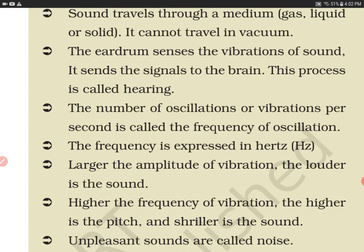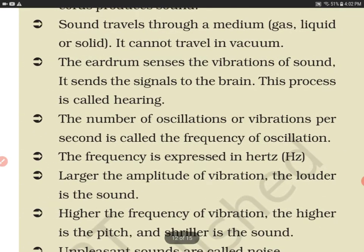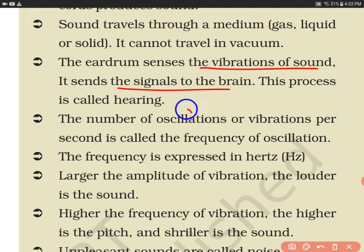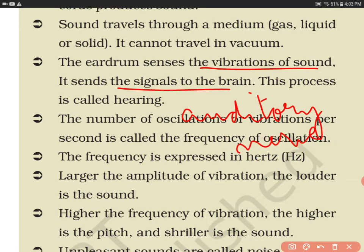The eardrum senses the vibration of sound and sends signals to the brain — this process is called hearing. The eardrum is called the tympanic membrane. It senses the vibration of sound and converts it into a signal. Through our nervous system, there is a nerve called the auditory nerve. This is a likely exam question: the nerve responsible for hearing is the auditory nerve.